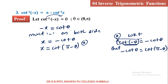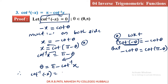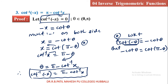So x is equal to cot of pi minus theta. Taking cot to the left side: cot inverse x is equal to pi minus theta. Then theta is equal to pi minus cot inverse x. Replacing theta as cot inverse of minus x: cot inverse of minus x is equal to pi minus cot inverse x. Hence we proved the third property in this pi minus set.